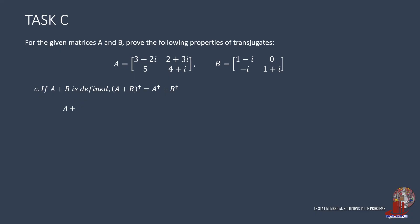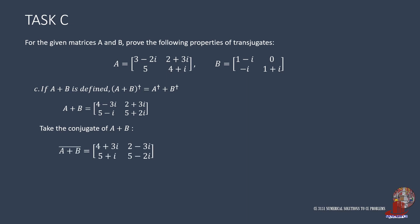Knowing A plus B, take the conjugate as a step closer to its Hermitian transpose. The conjugate is taken by flipping the signs of the imaginary numbers of all elements. So bar(A+B) now has elements 4 plus 3i, 2 minus 3i, 5 plus i, and 5 minus 2i. Then take the transpose of bar(A+B) to get the matrix's transjugate. The first row has 4 plus 3i and 5 plus i; the second row has 2 minus 3i and 5 minus 2i.